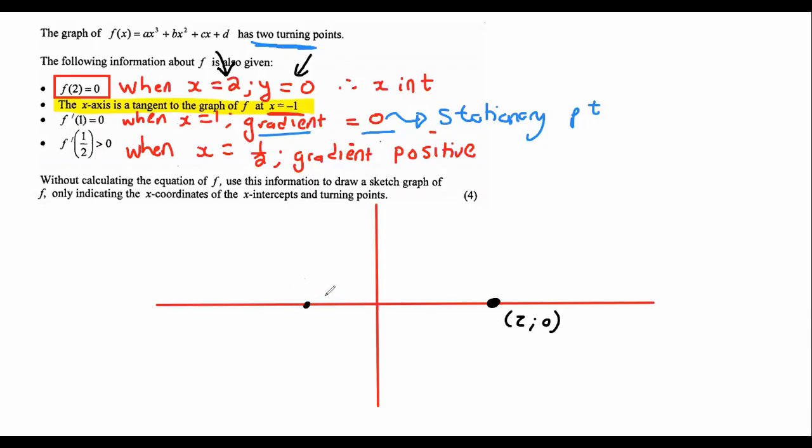Then the x-axis is a tangent. How can the x-axis be a tangent? It can only be a tangent if your graph is turning on the x-axis. Then it's a tangent.